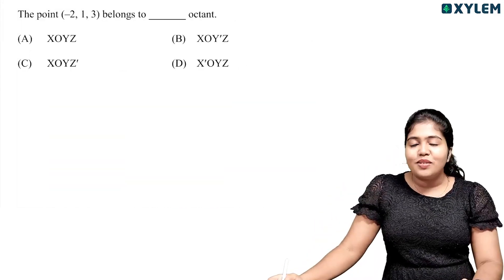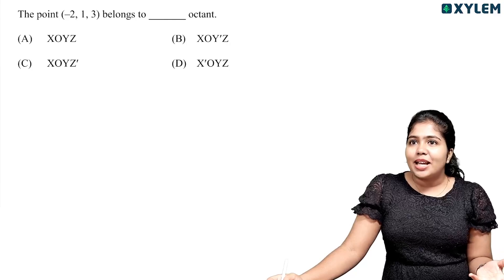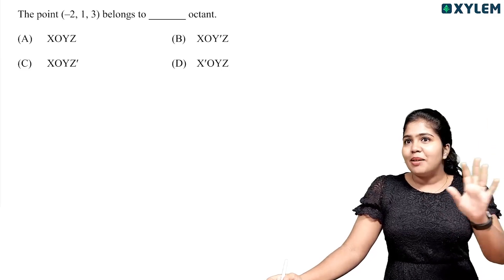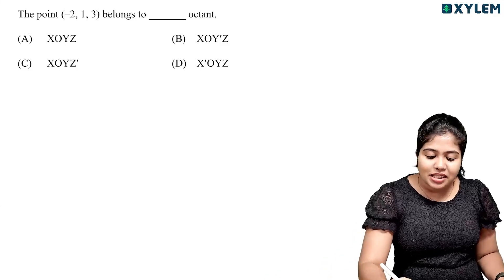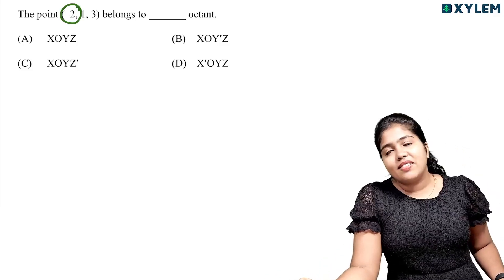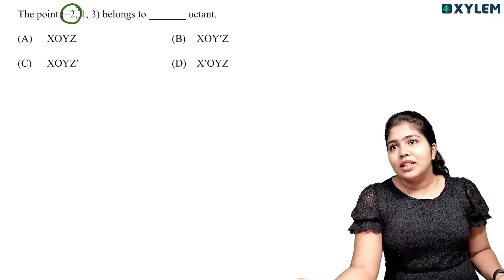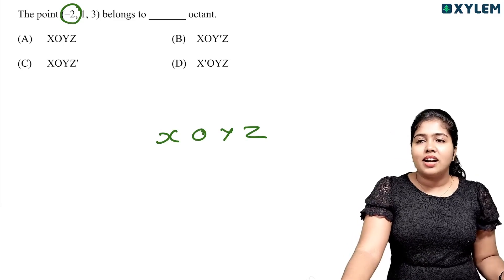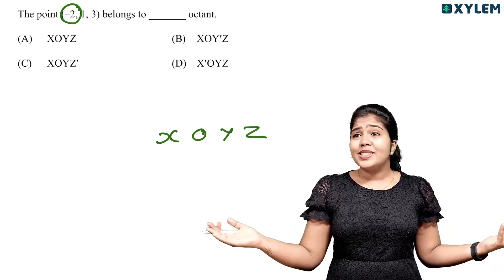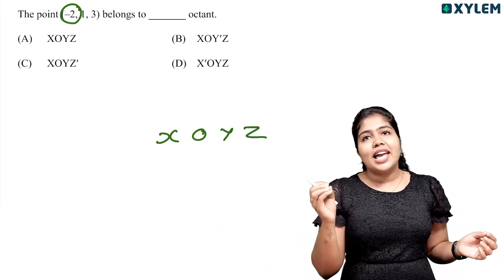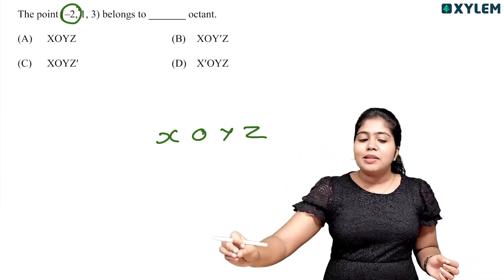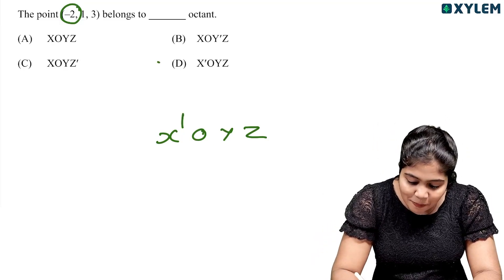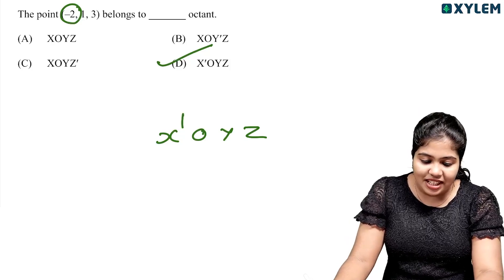Moving to the next question: the point (−2, 1, 3) belongs to which octant? Every octant is identified by the sign of coordinates. If x is negative and y, z are positive, that means it lies in the x′OYZ octant. So option D is the right answer.